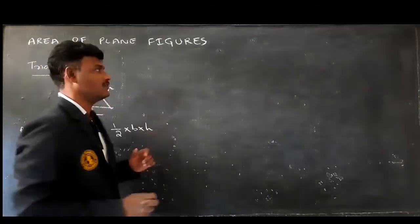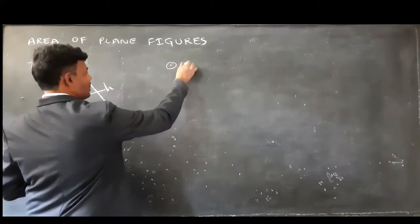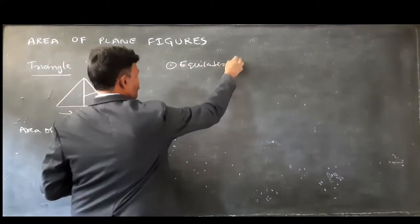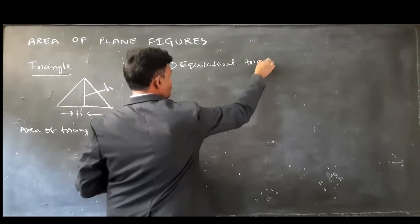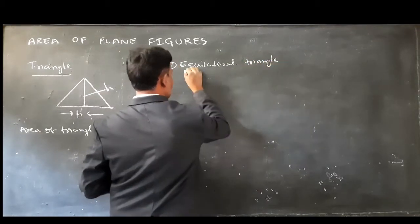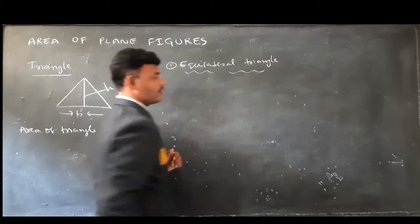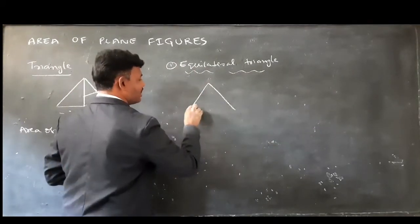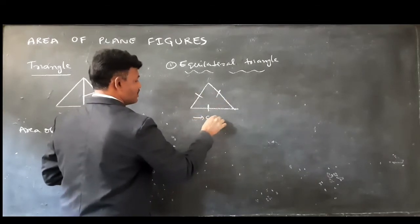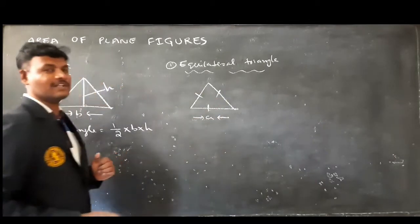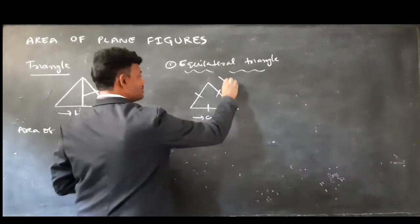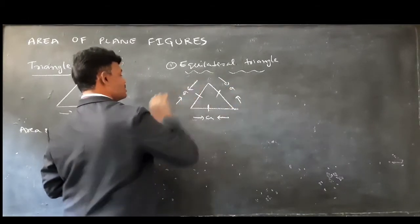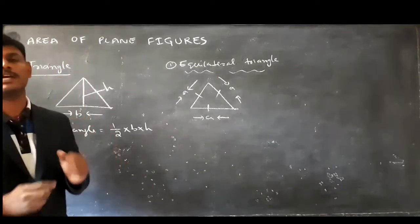You know very well, triangles are of three types. The first one is the equilateral triangle. In an equilateral triangle, all three sides are equal. If the length of one side is A, then all sides are A because in an equilateral triangle all sides are equal.